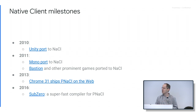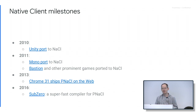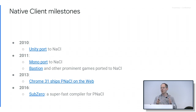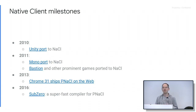The technology just kept getting better and better over the years. In 2016, Sub-Zero was launched — basically a super-fast compiler for PNaCl. This addressed the issue that finishing compilation on the user's machine can be slow for large projects. Sub-Zero was very fast, faster than building with -O0.